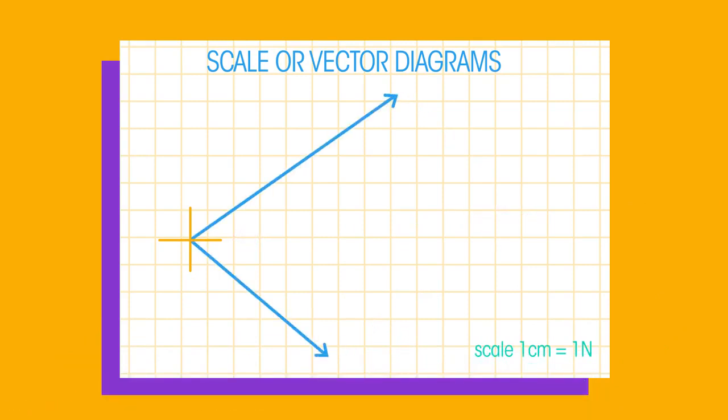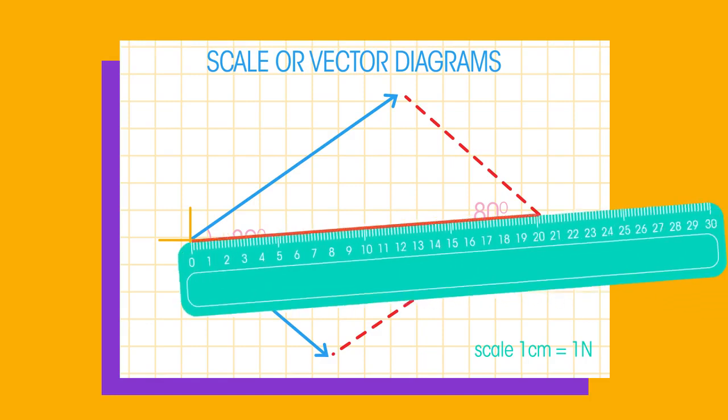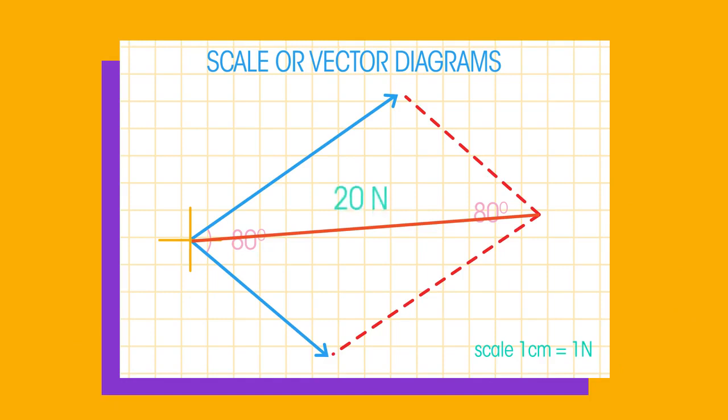Step one draw the arrows at the correct angles to represent the forces. Step two draw lines to make a parallelogram. And step three measure the diagonal of the parallelogram. This is your resultant force.